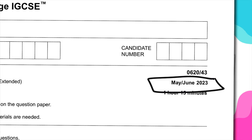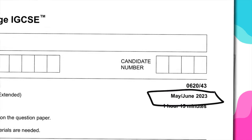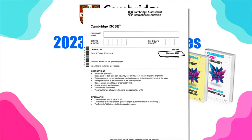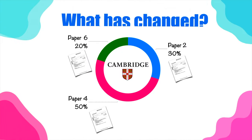I'm going to tell you about the things you need to study and all of the things that are no longer in the syllabus and you don't need to study anymore. Keep in mind that the exam structure has not been changed. You still have the three exams: paper two, four, and six, with exactly the same weight — 30, 20, and 50%. But the changes are only to the materials of the exam.